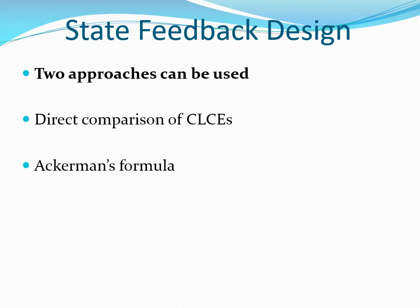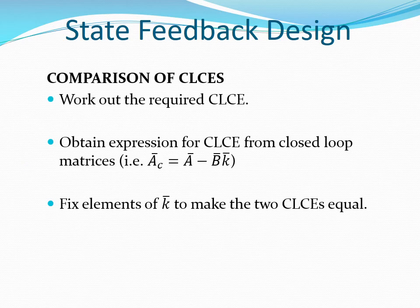There are two approaches that are used in state feedback design. The first one is direct comparison of the closed loop characteristic equations so as to get the matrix K. In the approach that uses comparison of CLCEs, we first work out the required CLCE. The required CLCE is obtained from the desired closed loop poles. Next, we obtain the expression of the actual CLCE. This expression is obtained by putting unknowns in the matrix K and then working out an expression for the actual CLCE using the unknowns.